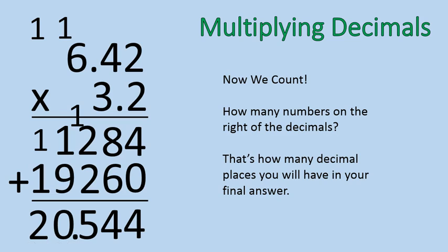Okay, that's pretty straightforward with multiplying. Multiply just like normal, count the number of numbers on the right of the decimal, and that will be the number of numbers on the right of the decimal in your final answer.